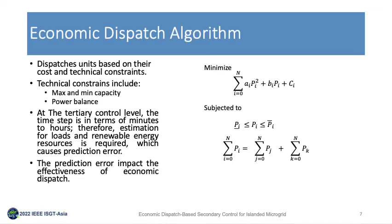The economic dispatch algorithm applies an optimization function to minimize a quadratic cost function subjected to power capacity limits and power balance constraints. The power balance constraint ensures that generated power equals power demand plus line losses. Economic dispatch is usually done in grid-connected mode for dispatchable units in a grid-following strategy, with a larger time step spanning minutes to hours, requiring estimation of power demand and renewable energy generation quantities.